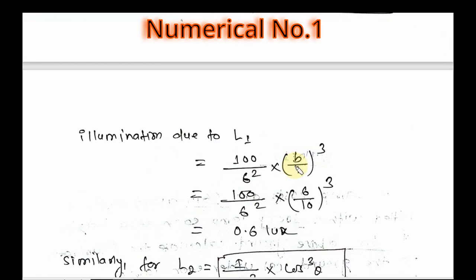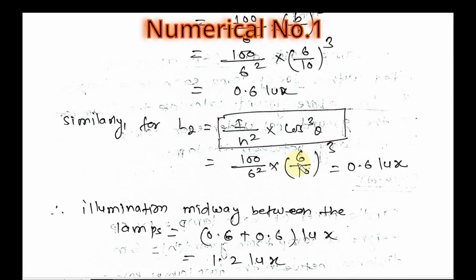We know cos theta equals base by hypotenuse. The calculation becomes 100 divided by 6 squared times (6/10) cubed, which gives 0.6 lux. Similarly, L2 gives 0.6 lux. The total illumination between the lamps is 1.2 lux.